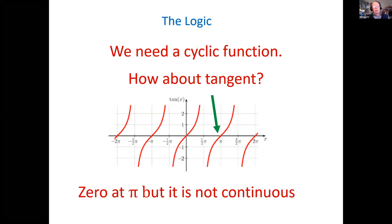So what about a cyclic function? Well, then I thought about tangent. And if we look at the green arrow at the value of pi, tangent of pi is zero. So this would be a suitable calculation, but the function is not continuous, would be difficult to impossible to compute.